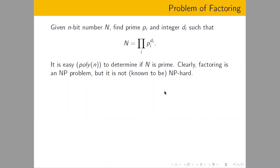If a number cannot be factored, it's called a prime number. There exist deterministic algorithms polynomial in the number of bits that determine if a number N is prime. Factoring is of course an NP problem because you can quickly check that a factorization is correct, but it's not known to be NP-hard. Many people believe it's not NP-hard, and because of that, algorithms faster than purely exponential exist, but purely polynomial algorithms do not.